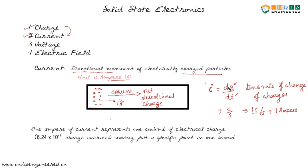If there is some change in charge with respect to time, we can say that there is some current flow. The unit of current is Coulomb per second, and one Coulomb per second we call one ampere of current flow. One ampere means one Coulomb of electrical charge flowing past a point in one second. Now we will see how we can cause charges to move and cause a current flow.